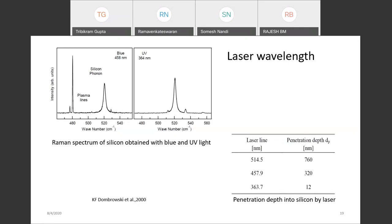The Raman spectrum of silicon obtained with a blue laser and UV laser shows a broad spectrum with the triply degenerate optical phonon frequency at omega equal to 520 centimeter inverse. The other lines in the spectrum are plasma lines from the argon ion laser, resulting from atomic transitions of the ion in the laser tube.